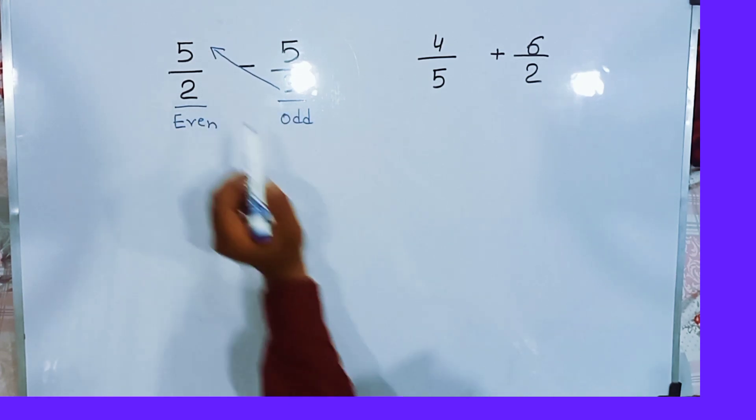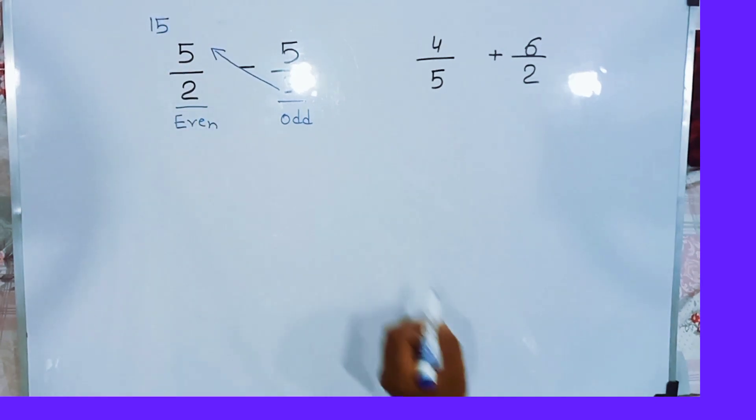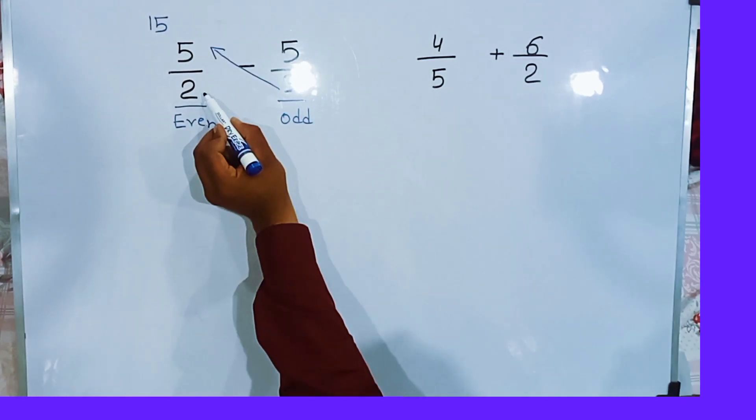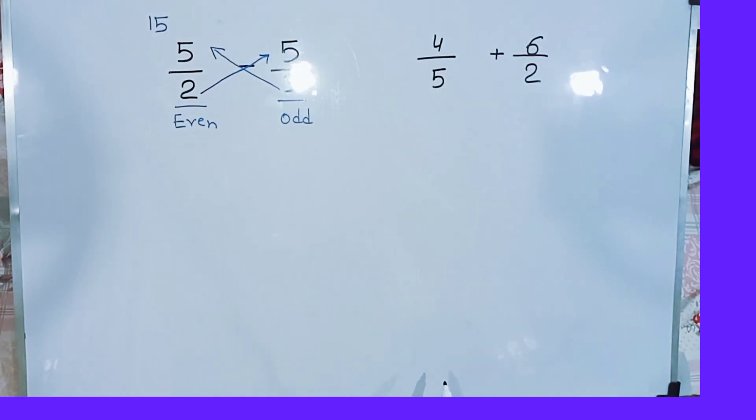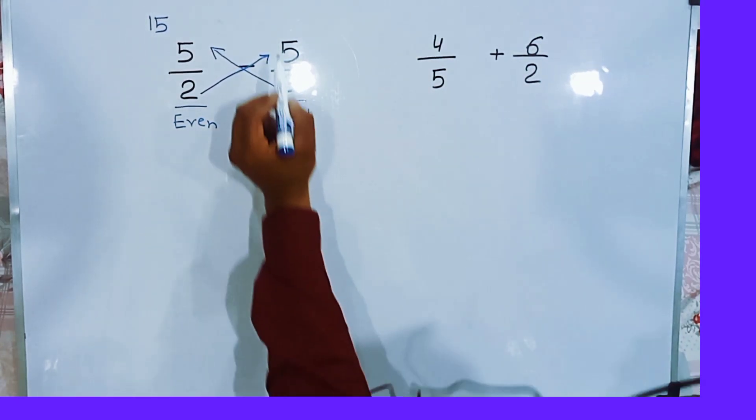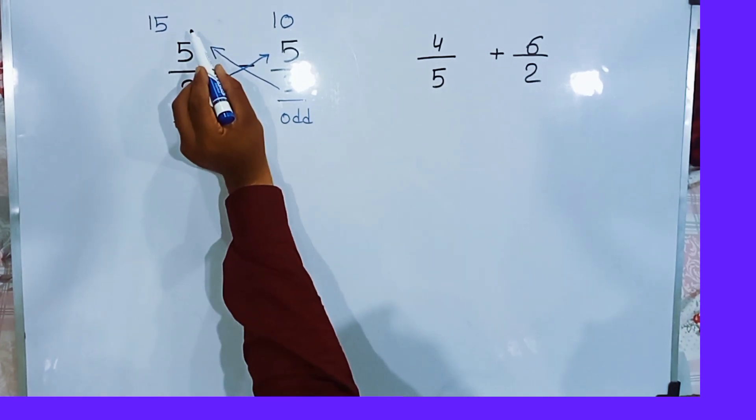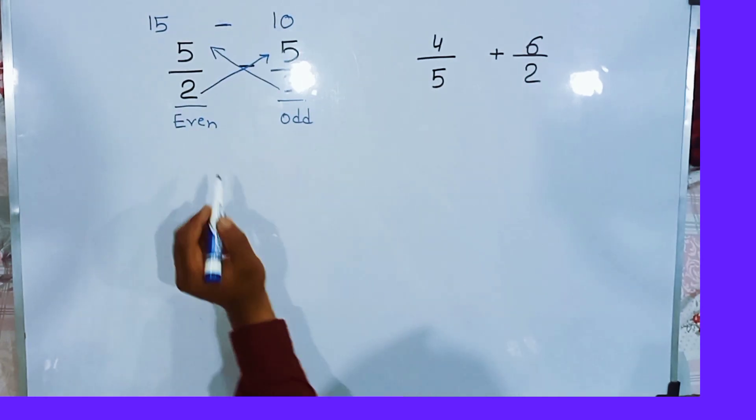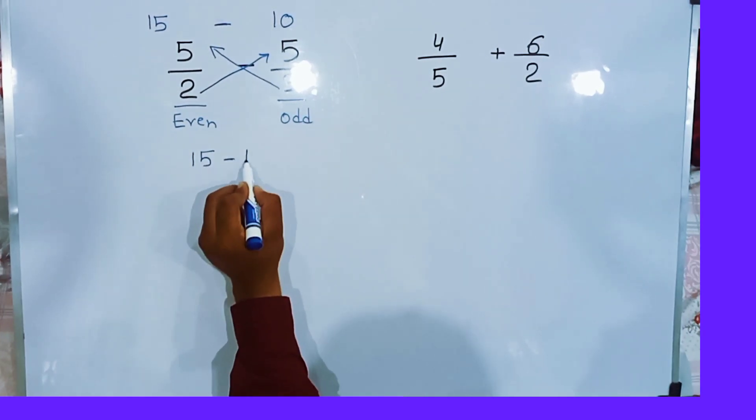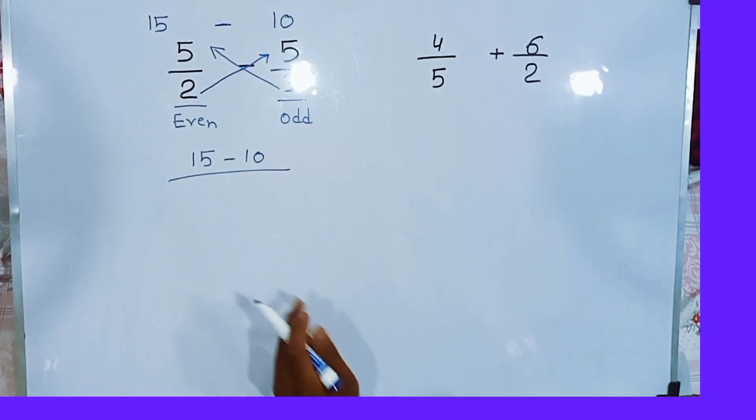And then 2 is multiplied by 5. When 2 is multiplied by 5 we will get 10. Then simply we will subtract these values: 15 minus 10.